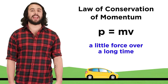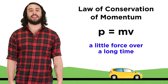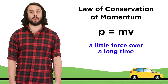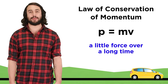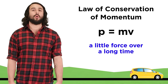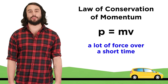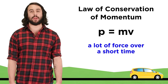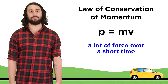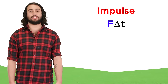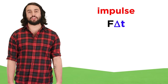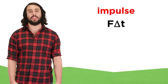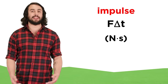A small force acting over a long time could do it, like if you take your foot off the gas and let the friction from the road slowly stop the car. Or a large force acting over a short time could do it, like firmly applying the brakes to the tires. The force that is applied multiplied by the duration of time that it is applied is called the impulse, which will be measured in Newton seconds.